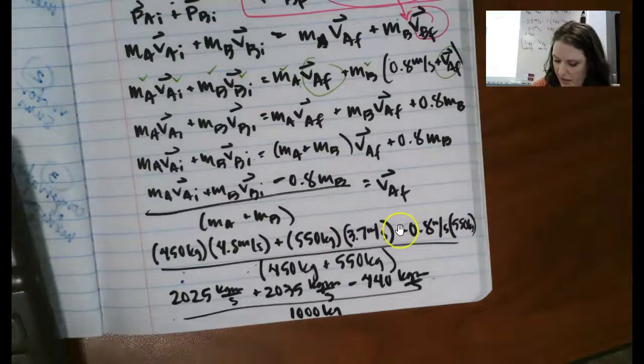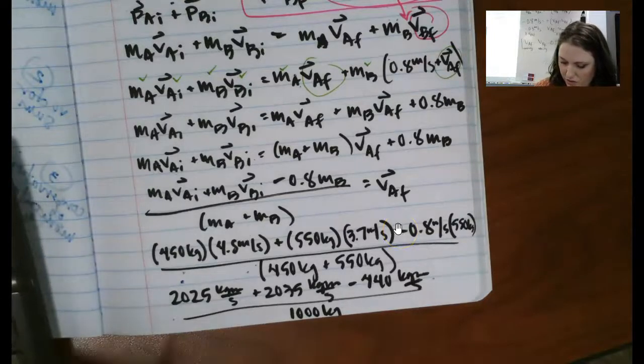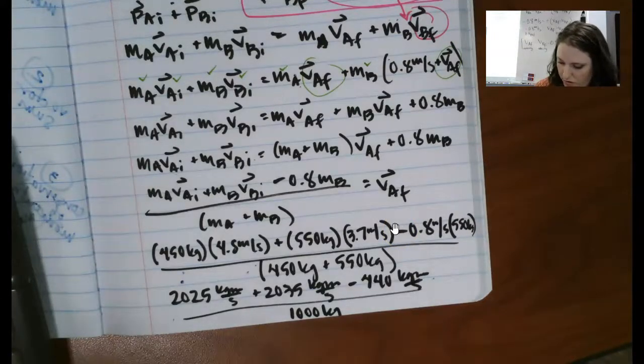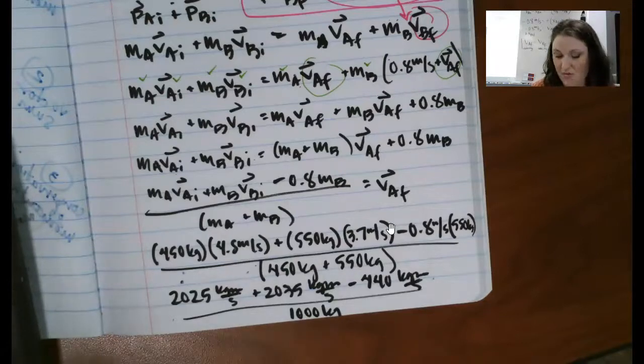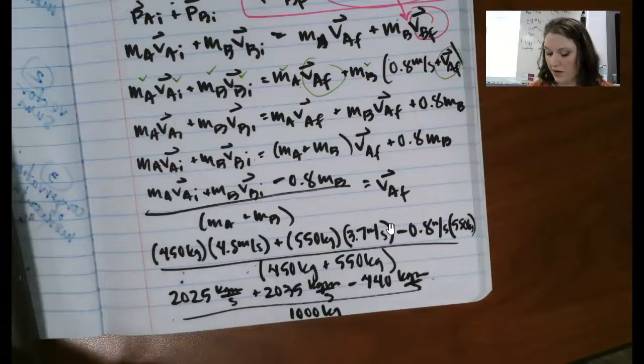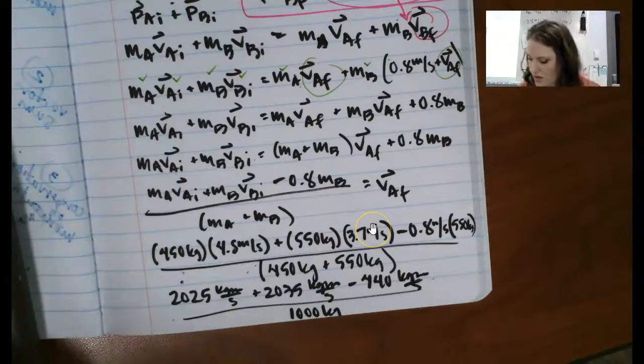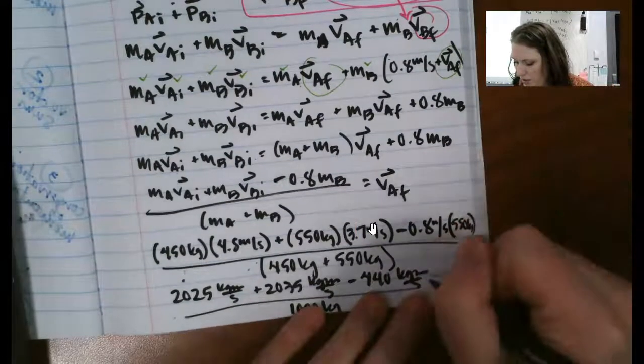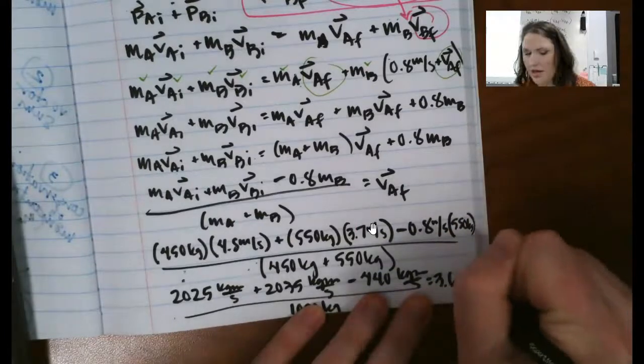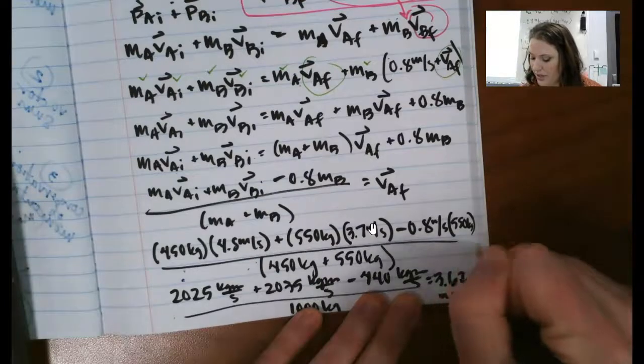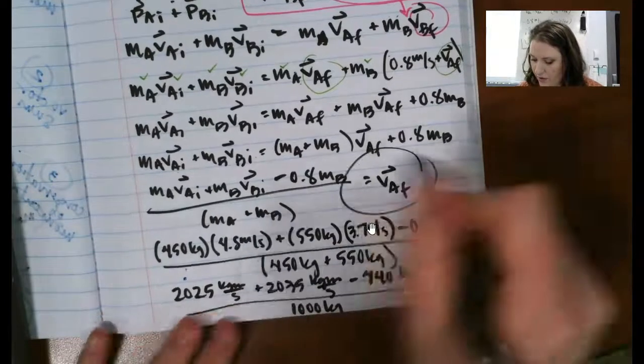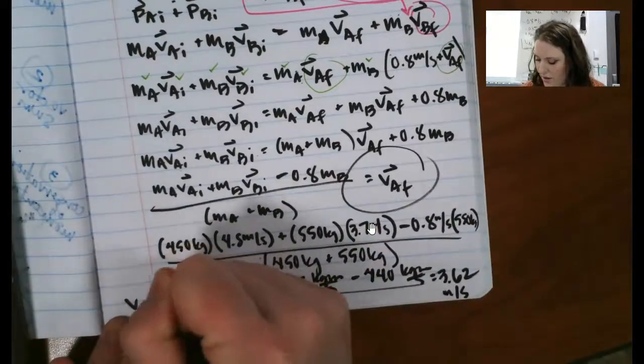So that I can do in my calculator pretty easy. 2,025 plus 2,035, minus 440, equals 3,620 divided by 1,000, equals 3.62, and if you've forgotten what we're solving for here, meters per second, that's our final velocity of car A. Alright, so the final velocity of car A is 3.62 meters per second.